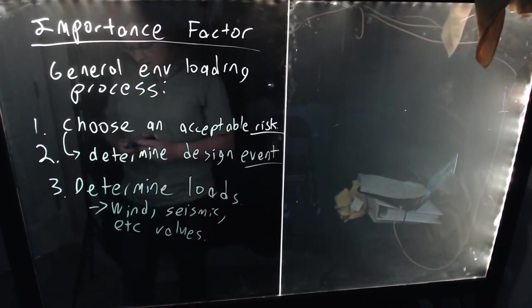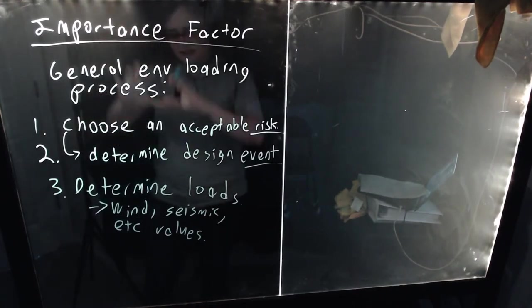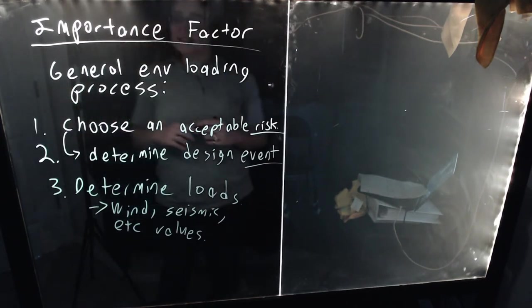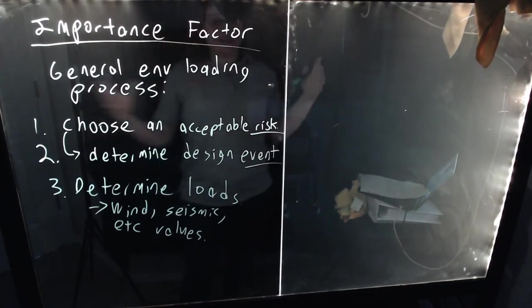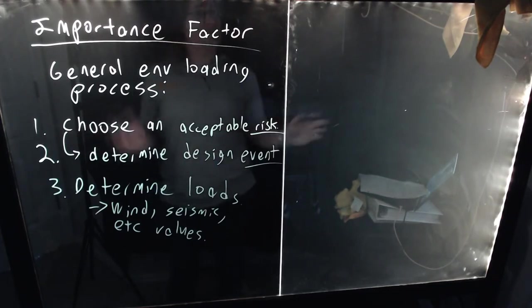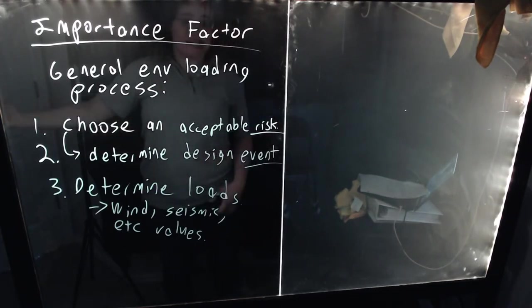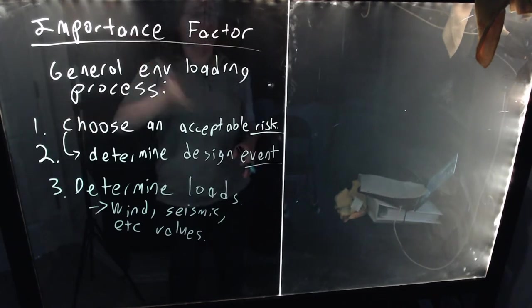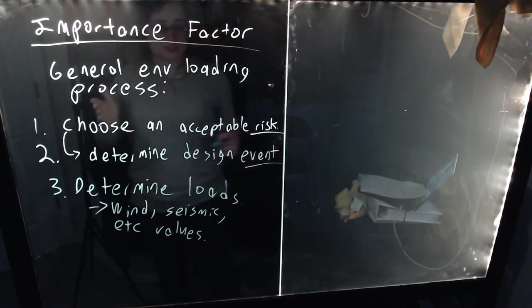However, this three-step process is looking really just at the storm itself. It's not considering the consequences of failure in particular. Now, while we can predict from pure base weather data and structural properties, you can say based on a certain exceedance probability, this is the level of wind force we expect to be applied to this structure.